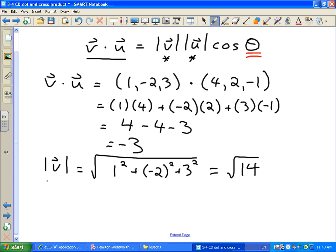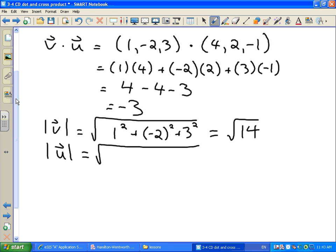And we can do the same thing for our vector U. Square root of, what do we have for U here? We've got 4 squared plus 2 squared plus, our Z component was negative 1, so negative 1 squared. And this gets us the square root of 16 and 4 and 1 is 21.